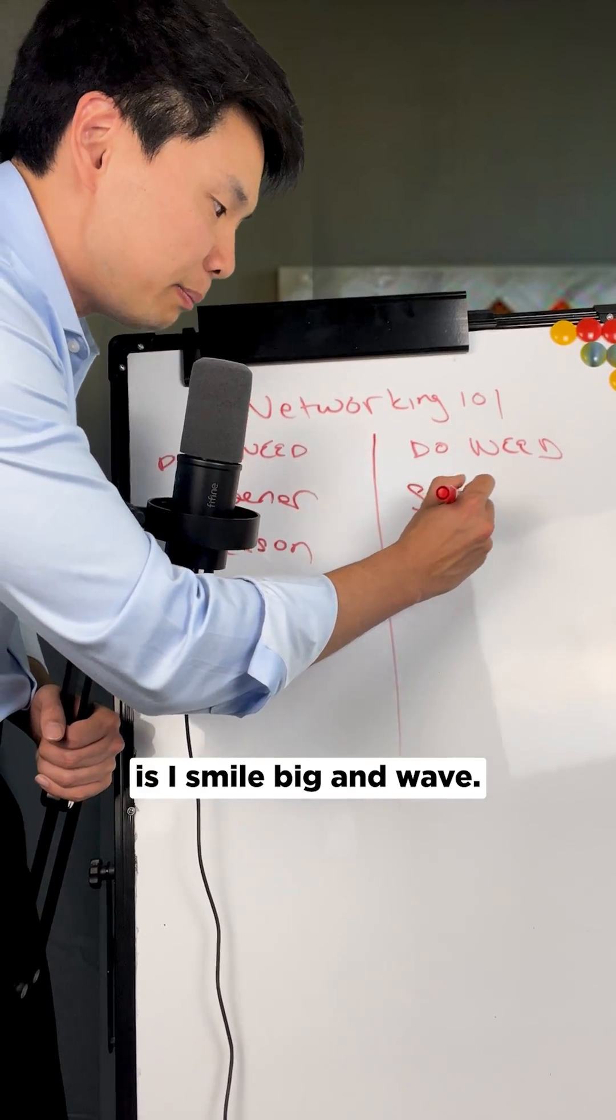The second thing you do is if there's a group of people in the conversation, all you say is, mind if I join. And right there, they can bring you in. And if they don't, that's on them. That's not on you. But the point is, all you're doing is saying, mind if I join. And it's very easy for them to say, go right ahead.